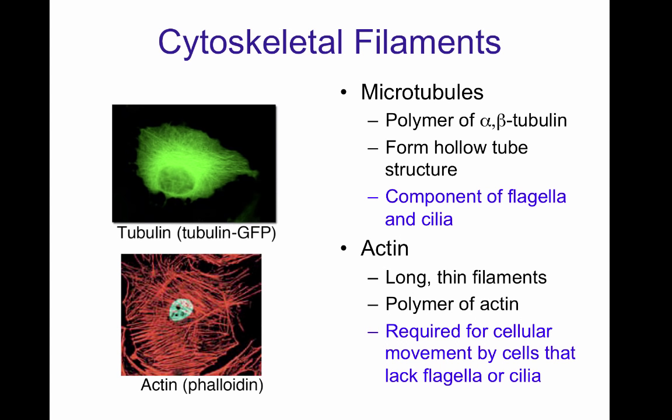On the other hand, actin forms long thin filaments that traverse the entire cell under the cortex. They are polymers of the monomer actin, and they are required for movement by cells that lack flagella or cilia, like amoeba cells.